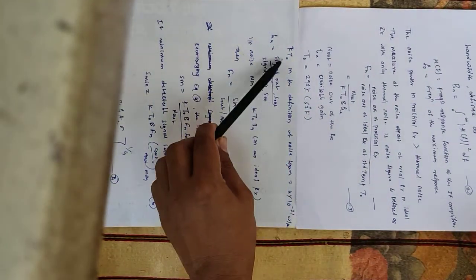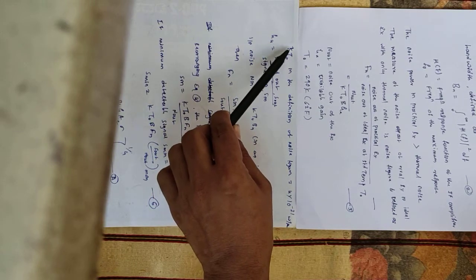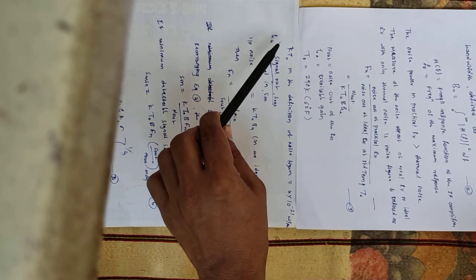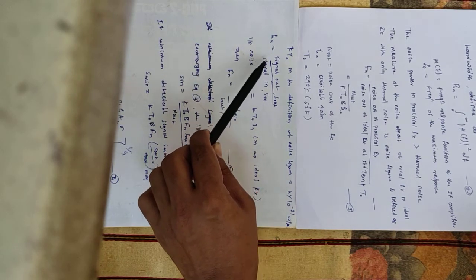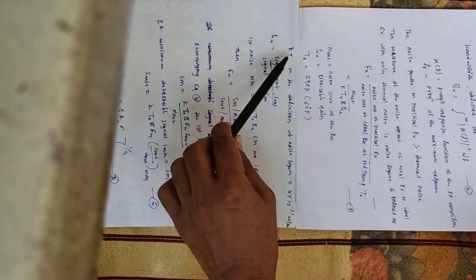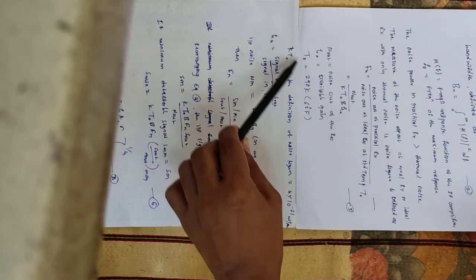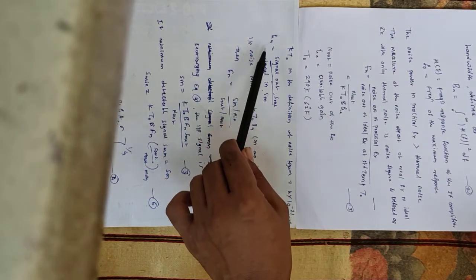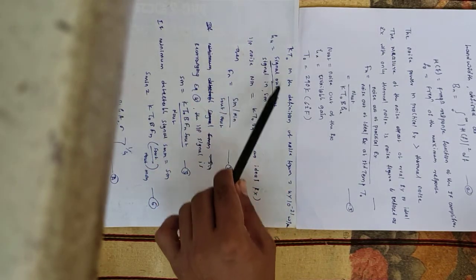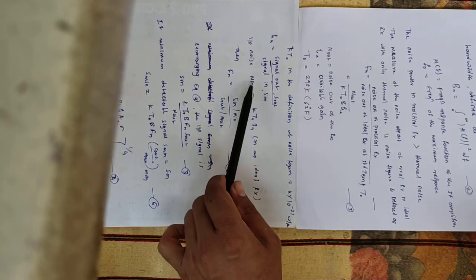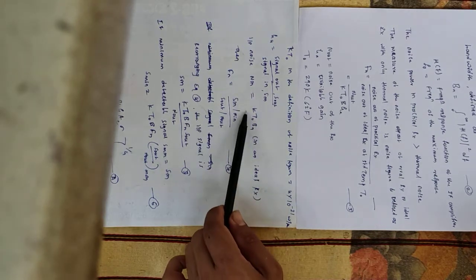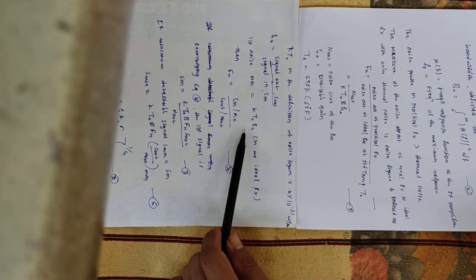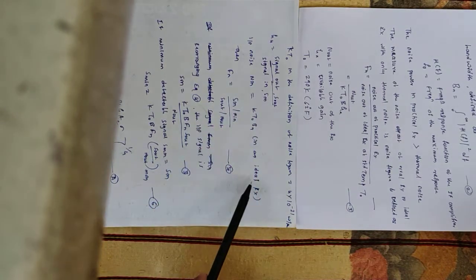Here kT0: k is the Boltzmann constant with value 1.38 × 10⁻²³, and T0 = 290 Kelvin. Multiplying these two gives 4 × 10⁻²¹ watts per hertz. The available gain Ga equals signal out divided by signal in, or Sout/Sin. The input noise Nin equals kT0·Bn — this is the input noise at the ideal receiver.